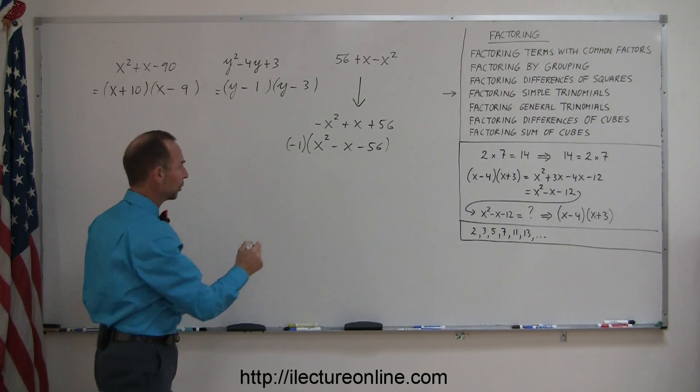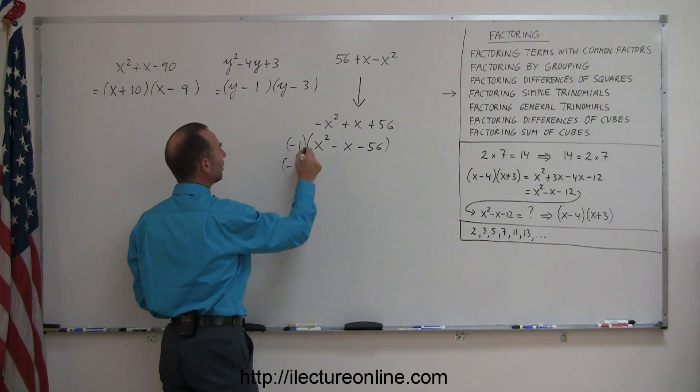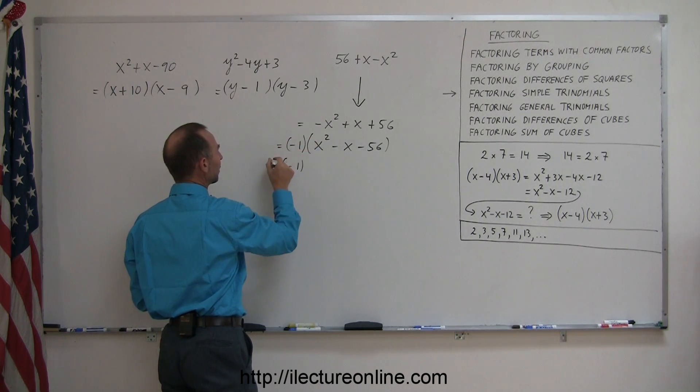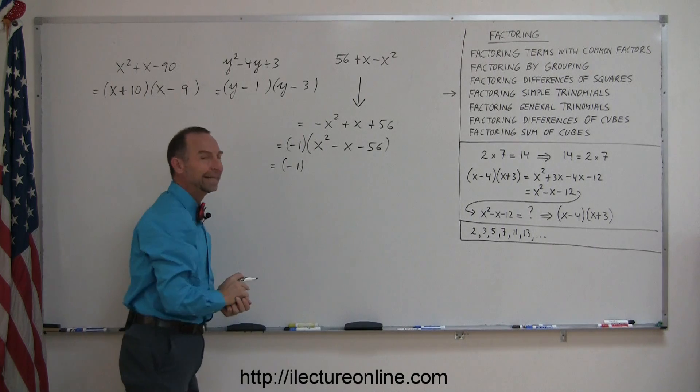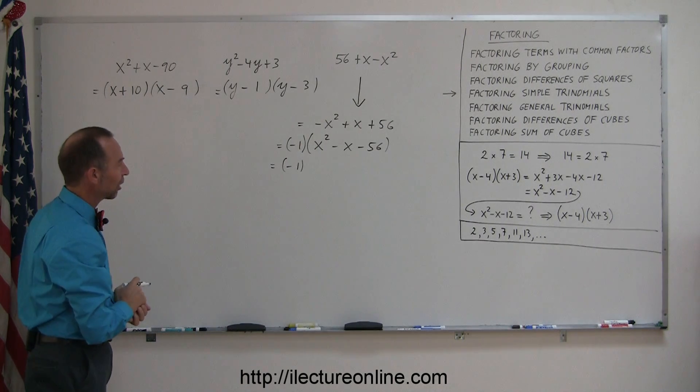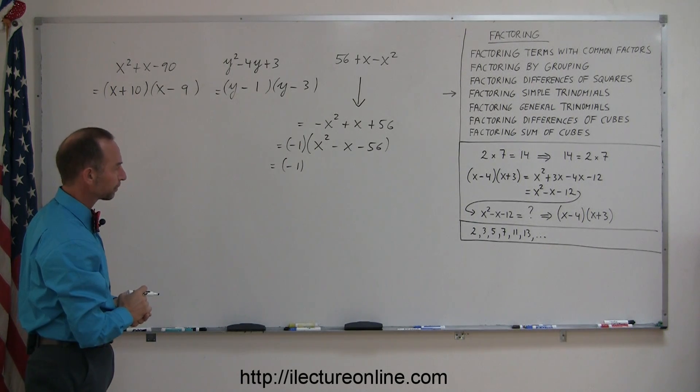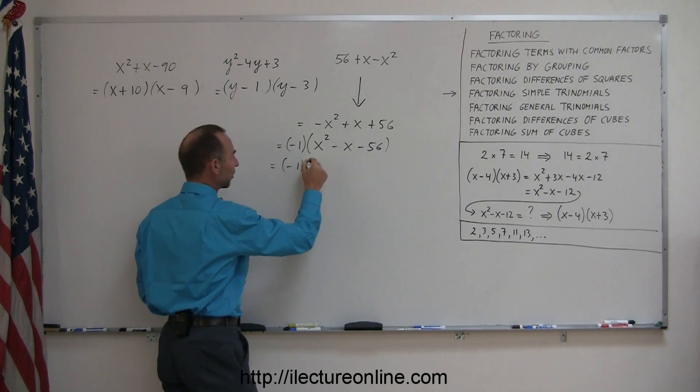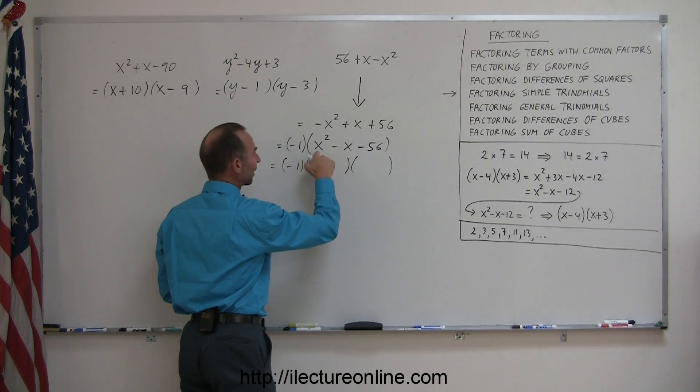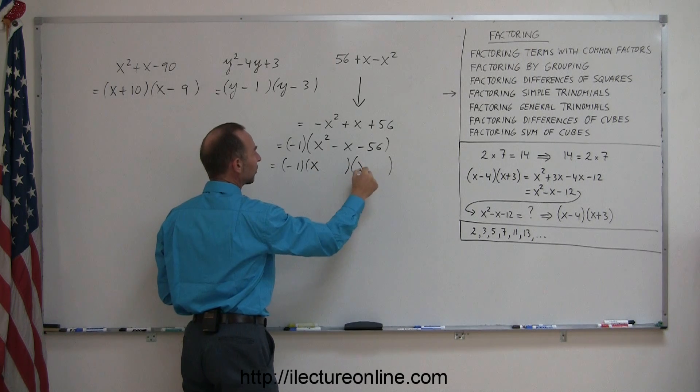Again, the same principle holds. You do have to keep carrying the negative 1, and it's probably not a bad idea to put the equal sign there, so that you indicate yourself that nothing has changed, you just put it into a different form. You need your two sets of parentheses. Since you have an x squared here, you will need an x and an x.